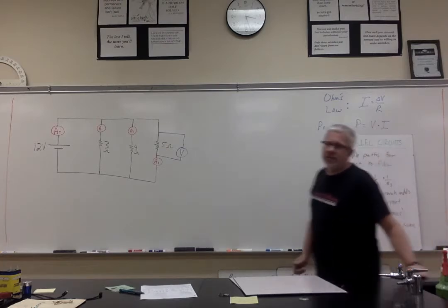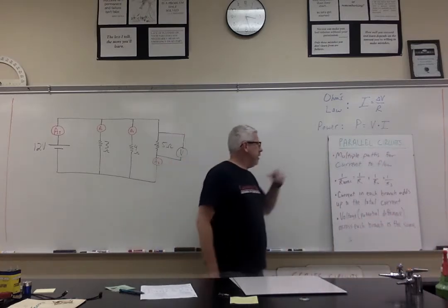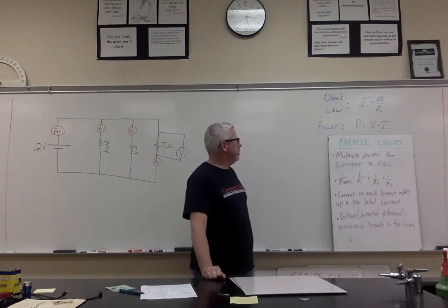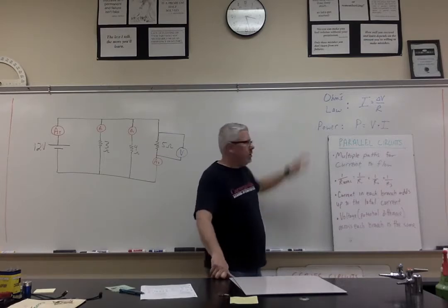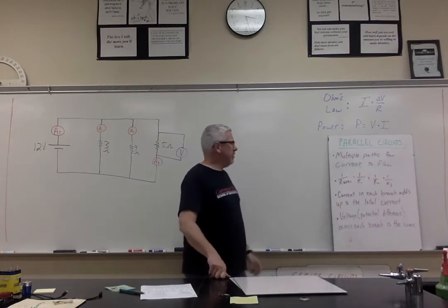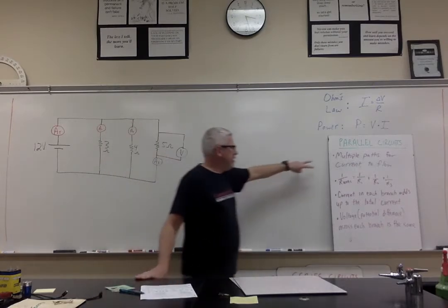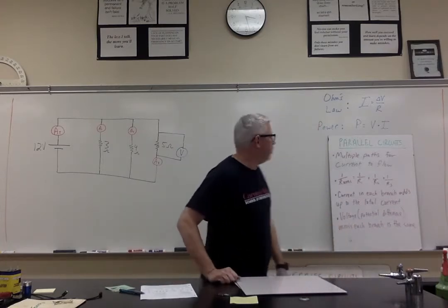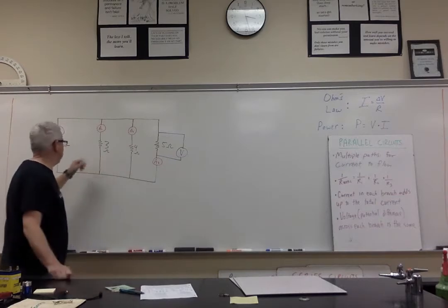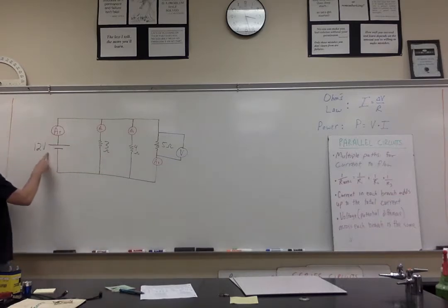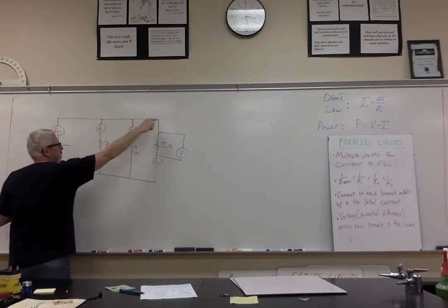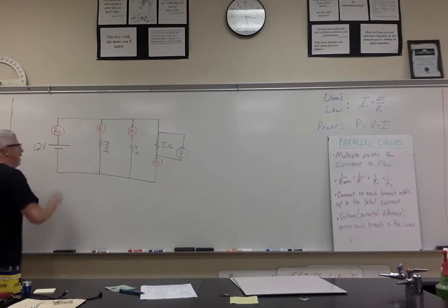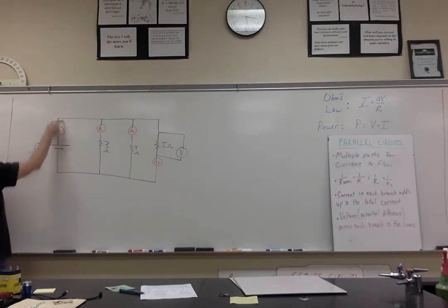Welcome back! Our final lecture on electric circuits is about parallel circuits. Parallel circuits still follow the same equations as Ohm's law and the power calculation. Compared to the last video, there are some notable differences. One thing is that parallel circuits by definition have multiple paths for electricity to flow. I've got one drawn over here — the battery or power source of 12 volts is on the left, and then I've got one branch here, another branch here, and finally a third branch. I've got an ammeter to measure the current going through the main part of the circuit.